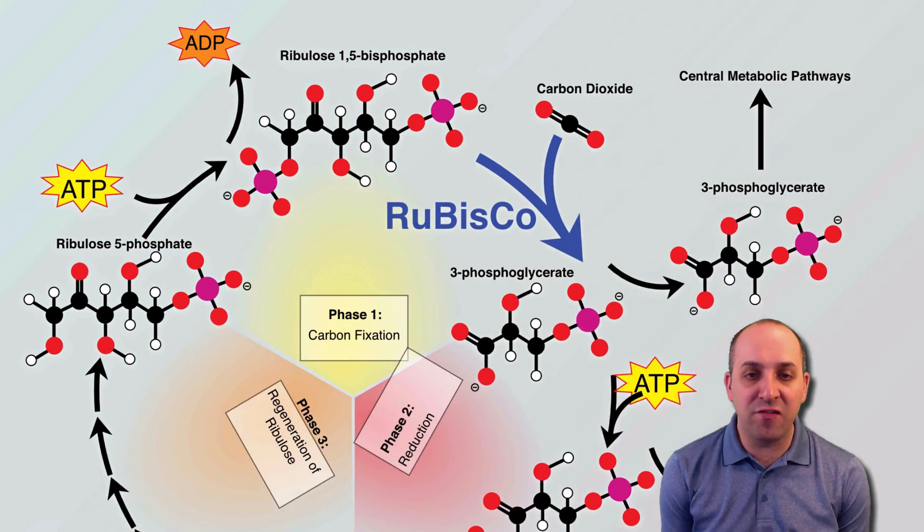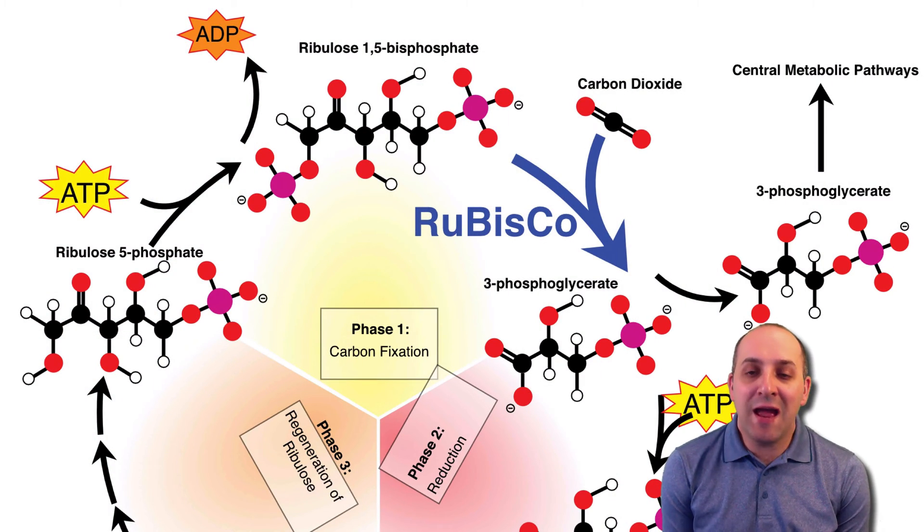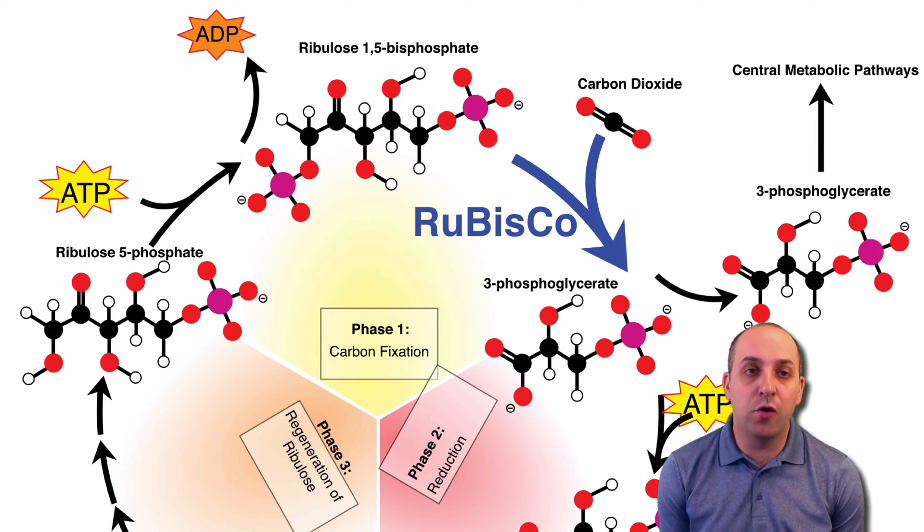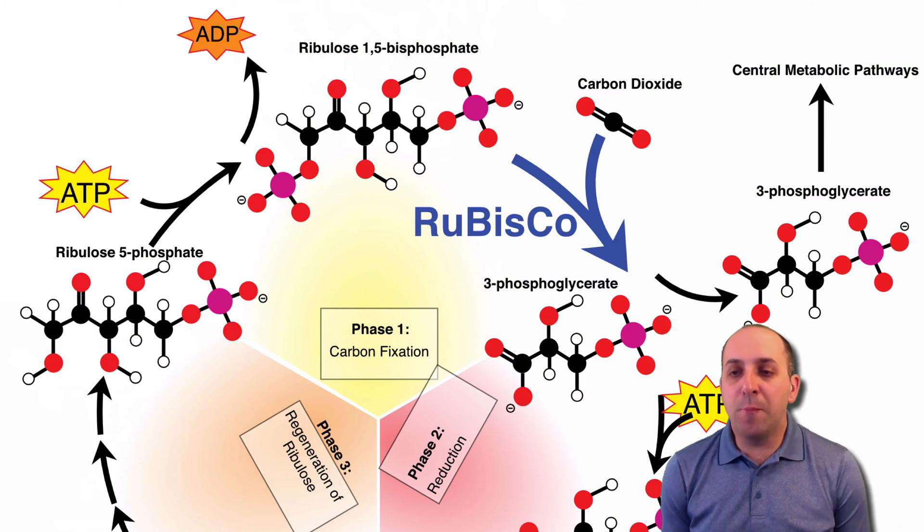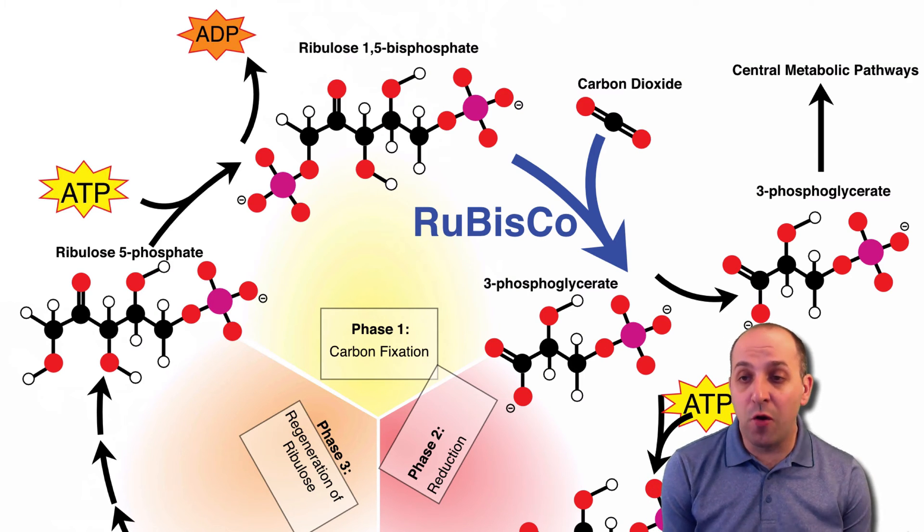In the first phase of carbon fixation, carbon dioxide is brought into the cycle from the atmosphere. That carbon dioxide is combined with a molecule known as ribulose 1,5-bisphosphate, also known as RUBP, and immediately undergoes a series of enzyme-controlled conversions, producing a product which has several different names. It's known as 3-phosphoglycerate, it is known as PGAL, and I generally call it G3P.